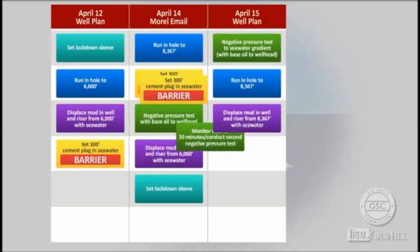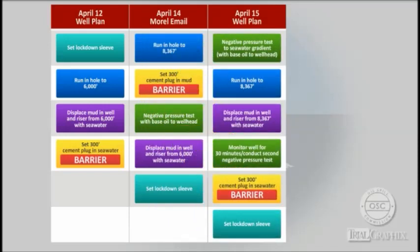On April 15th, BP changed the plan again. BP now planned to conduct a negative pressure test before setting the cement plug, and then to displace the wellbore and set the plug in seawater. This plug would be set deep in the well at 8,367 feet.